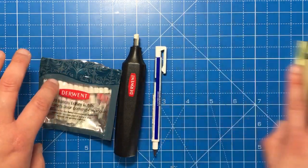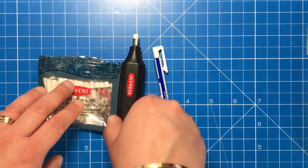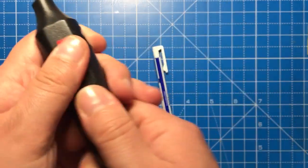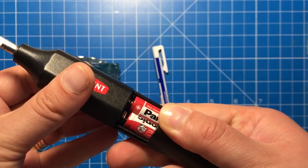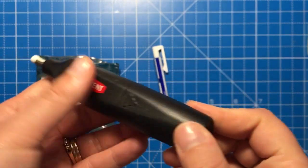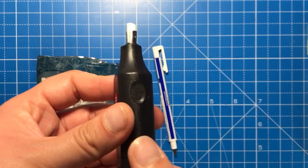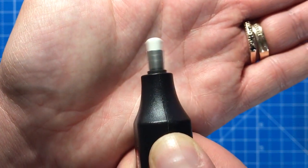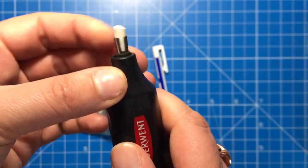I'll start off with erasers. This is a Derwent battery eraser, so it's battery powered with two AAA batteries which last quite a while. On the side here it has a button which when you press it rotates the eraser on the end.